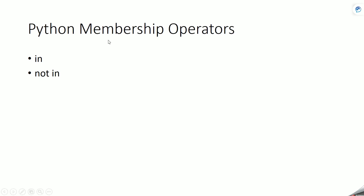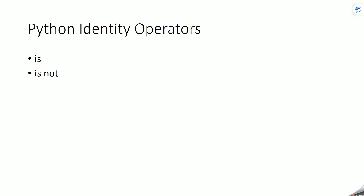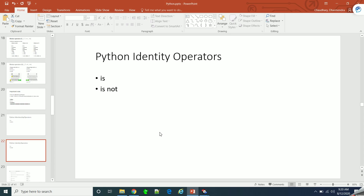Now we will see the membership operators: 'in' and 'not in'. These check whether a particular object is a member of some sequence or other object. Similarly, we have identity operators in Python, which check whether two objects are the same — that is, whether their memory locations are the same. Let's see examples of both.